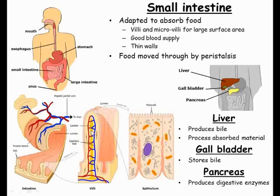Villi also have a very good blood supply through many capillaries, which is important as what is being absorbed by the body needs to be transported to where it is needed — that is the job of the blood and circulatory system. The blood is taken straight to the liver, where the absorbed products are processed into different substances that the body needs. Because the walls of each villus are so thin — just a single cell thick — substances easily diffuse through and into the blood. All the way along the small intestine, food is being moved by peristalsis and is continually being broken down by the enzymes it has been mixed with and the bacteria that live there.